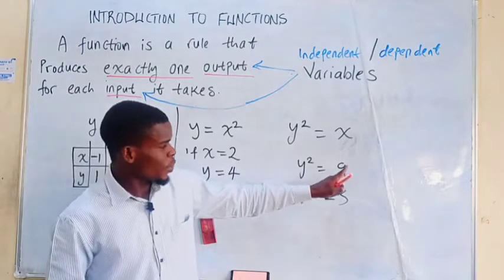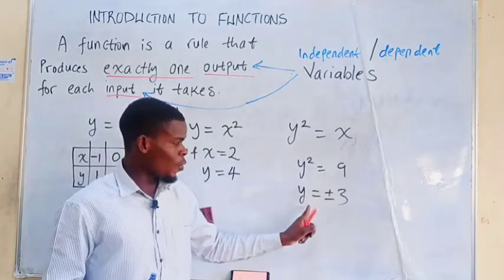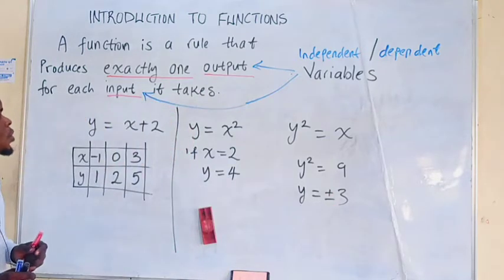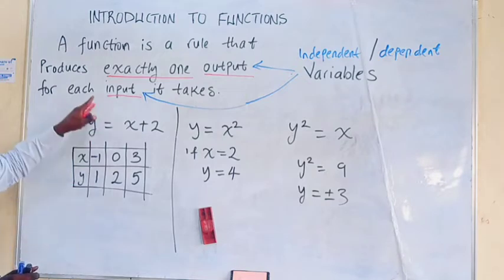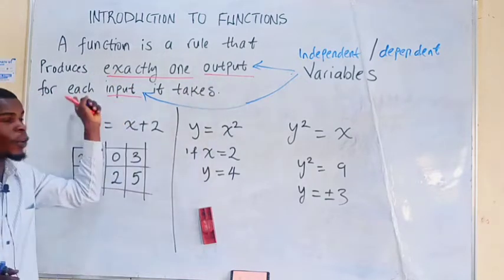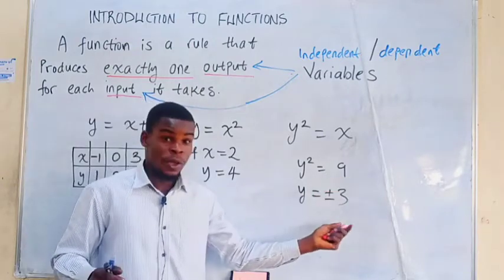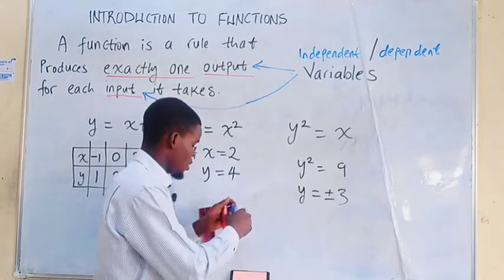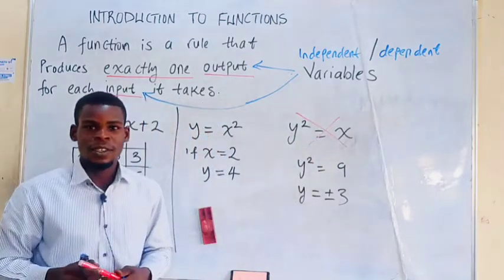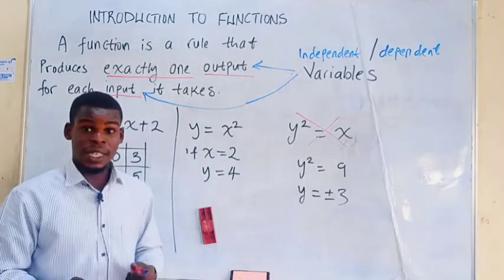Now, that means that when x is equal to 9, y will be positive or negative 3. Now, that contradicts something in this definition. We say that the function is a rule that produces exactly one output for each input. We inputted only 9 and it's giving us more than one output. So this right here is not a function. We have a couple of examples of equations that are not functions.